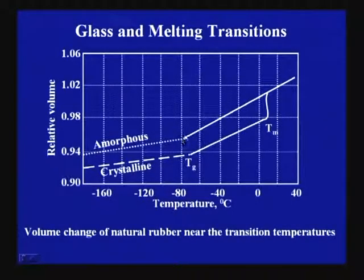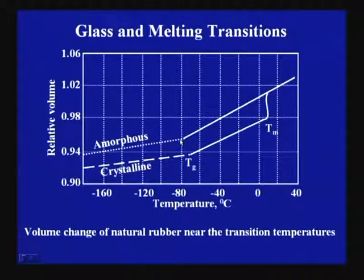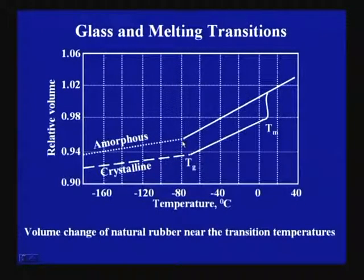That transition temperature is known as the glass transition, which makes a transition from a solid, brittle, glassy state to an amorphous, flexible, rubbery state. This occurs due to movement of short segments of polymer chains — segmental movement — onset of segmental movement. For purely amorphous polymers, we get only one transition, which is known as glass transition.